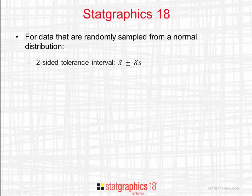If the data are randomly sampled from a normal distribution, then a two-sided tolerance interval can be constructed by taking the sample mean plus and minus a multiple of the sample standard deviation. The multiple is usually called K.